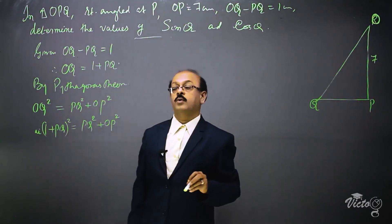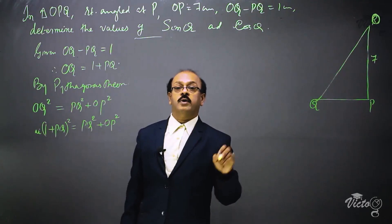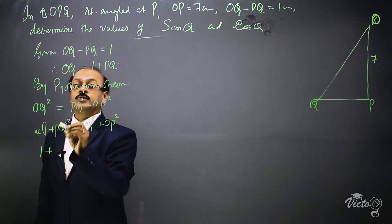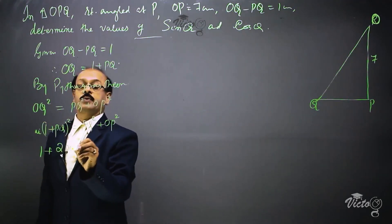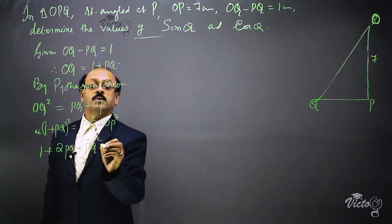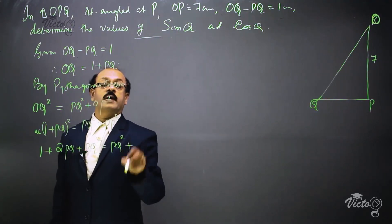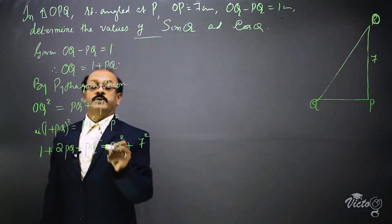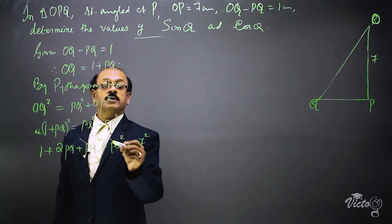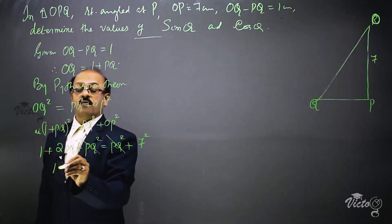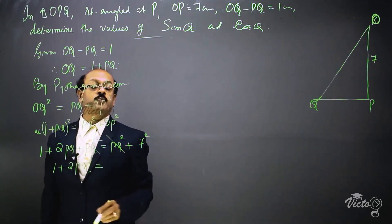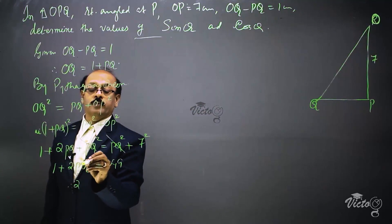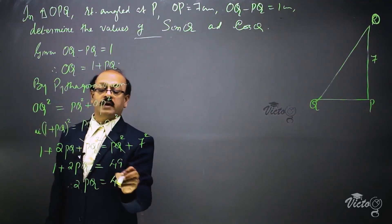We expand using the identity (A + B)² = A² + 2AB + B². So 1 squared plus 2 times 1 times PQ plus PQ squared equals PQ squared plus OP squared. The value of OP is 7, so OP squared is 49. The PQ squared cancels, leaving 1 plus 2PQ equals 49.